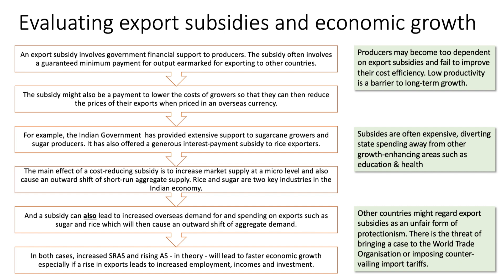The third point is that there could be a knock-on effect. If your government is providing extensive subsidies to their export businesses, other nations might regard that as an unfair form of protectionism — a non-tariff barrier. Therefore, there's the threat of bringing a case to the World Trade Organization, or imposing some sort of retaliatory countervailing import tariffs, which could affect another industry. So the Indian government subsidizes sugar, but other countries decide to put a tariff on exports of gherkins or cucumbers from India — that can obviously be damaging to growth.